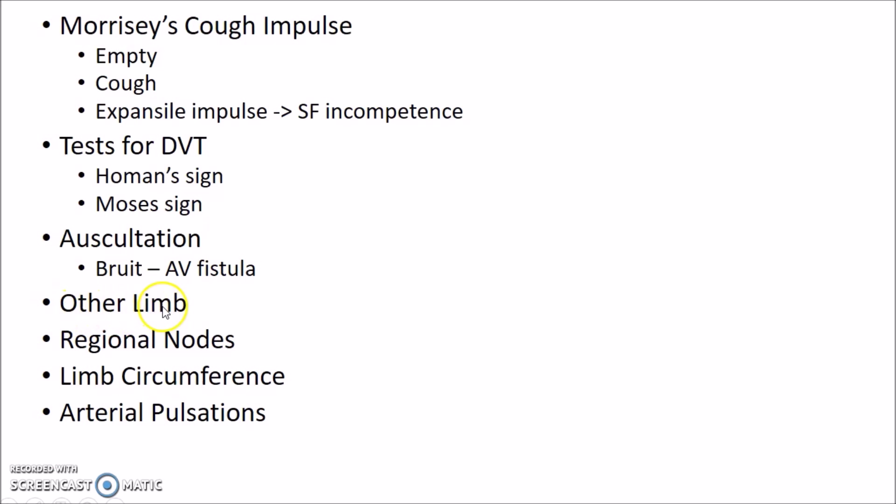After this, examine the other limb and regional lymph nodes. You need to measure the limb circumference of both limbs at a point above or below a fixed bony point, and compare both limbs. Then examine the arterial pulsations. When presenting the diagnosis, mention that this is a case of varicose veins, which limb is affected, which venous system is involved — great saphenous, short saphenous, or both — which perforators are incompetent, and whether there is any clinical evidence of deep vein thrombosis.